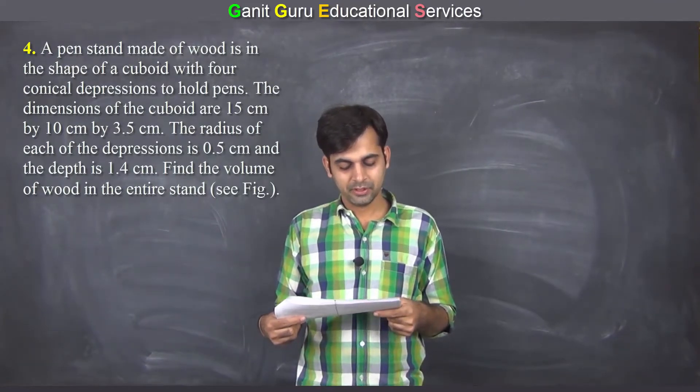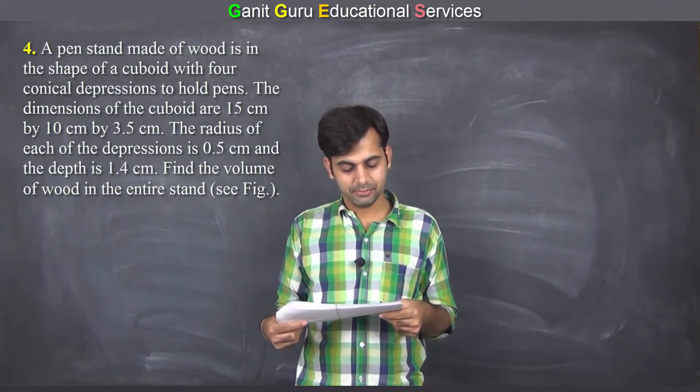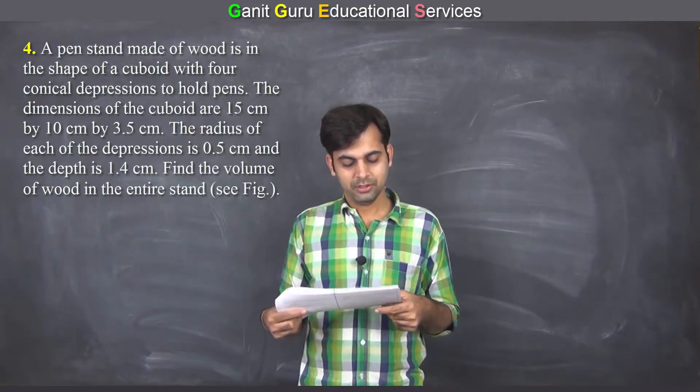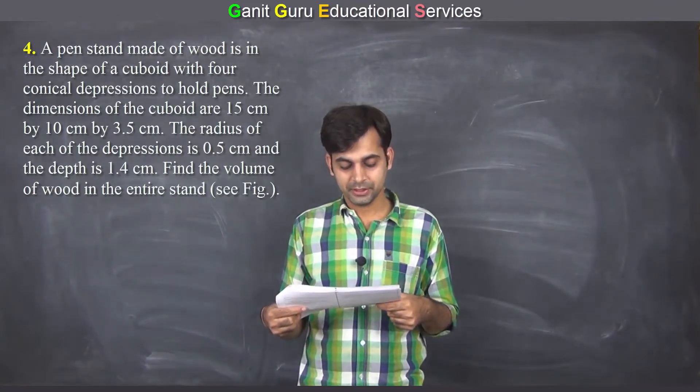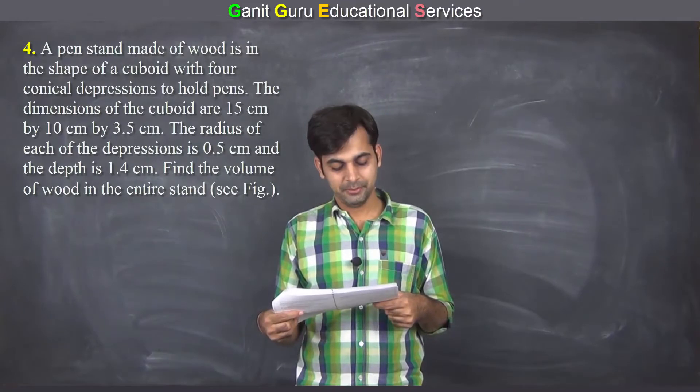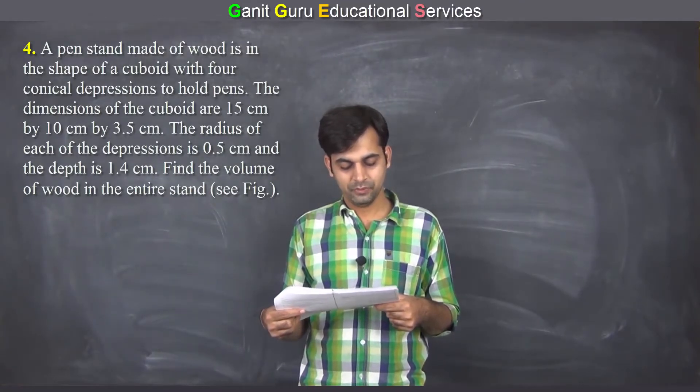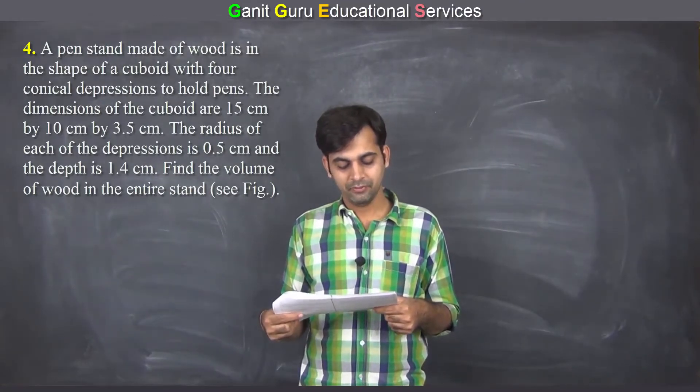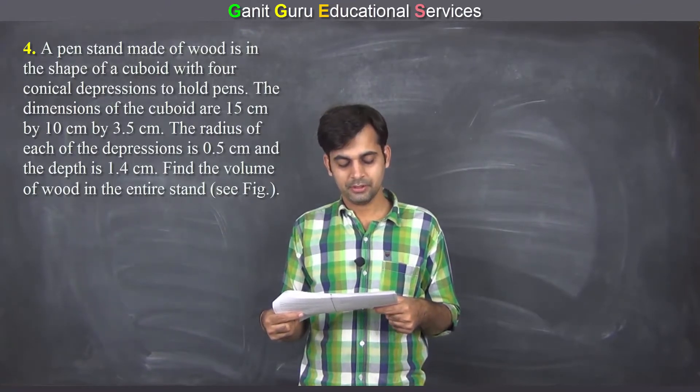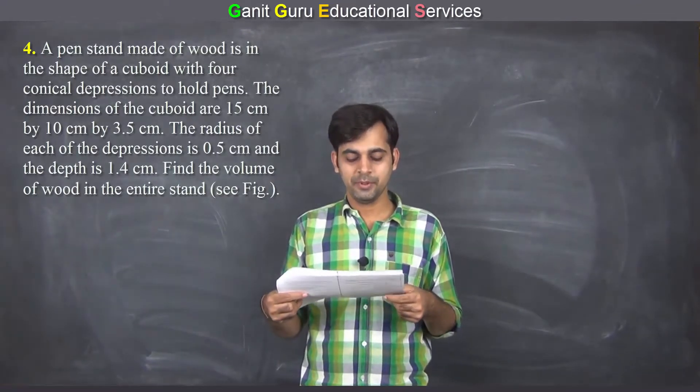The dimensions of the cuboid are 15 by 10 by 3.5 cm. The radius of each of the depressions is 0.5 cm and depth is 1.4 cm. Find the volume of the wood in the entire stand. The diagram is in the book.